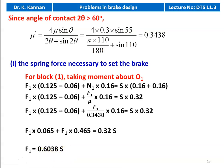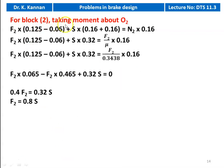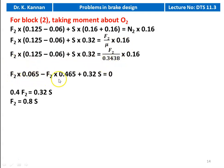F1 = 0.6038 × S, where S is the spring force. Similarly, for block 2, taking moment about O2: F2 × (0.125 − 0.06) + S × 0.32 = F2/μ' × 0.16. Simplifying: F2 × 0.065 − F2 × 0.465 + 0.32S = 0, giving 0.4 × F2 = 0.32 × S, so F2 = 0.8 × S.